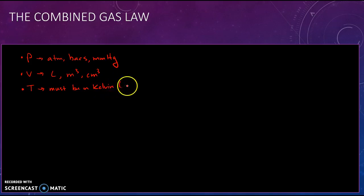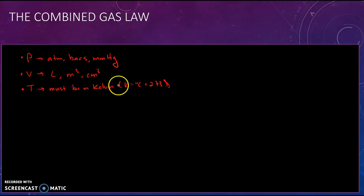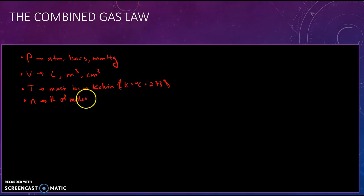To convert to Kelvin, just take the degrees Celsius and add 273 — there's a 0.15 on the end of that, but we don't usually need that many significant figures. And then we have the variable n, which is number of moles, and we don't need a special unit for that.